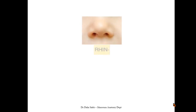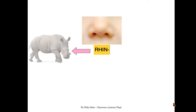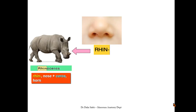For example, we have the nose — in Latin it's called 'rhin'. If you add the suffix '-ceros' we end up with 'rhinoceros'. Splitting this word into its components: 'rhin' means nose, 'ceros' means horn, and 'o' is the connecting vowel — so we have rhinoceros.